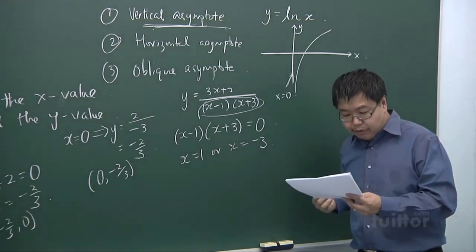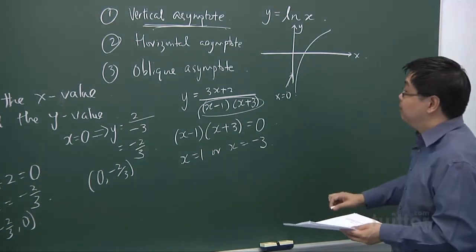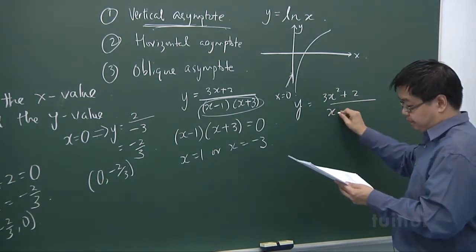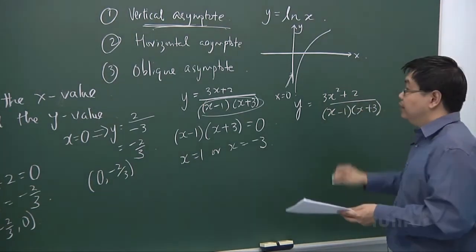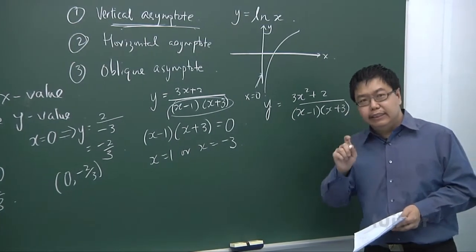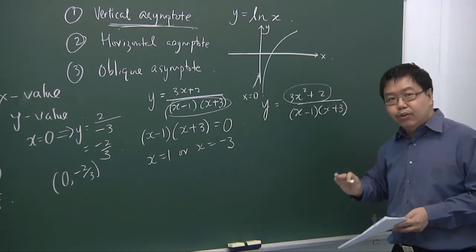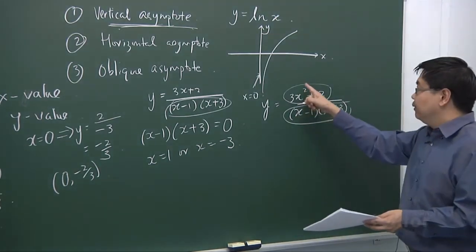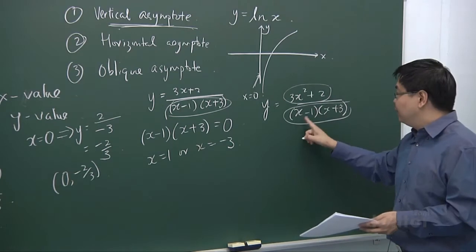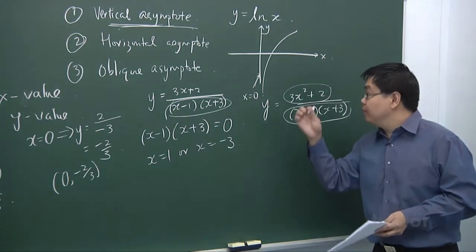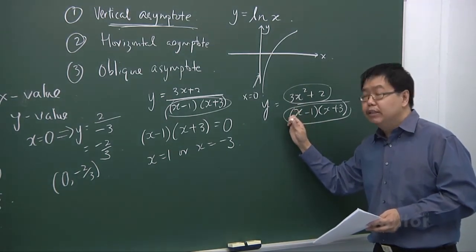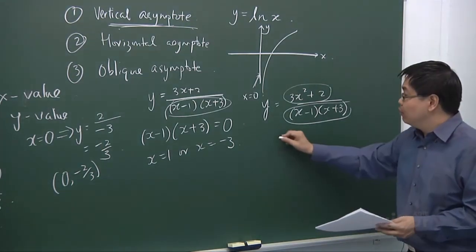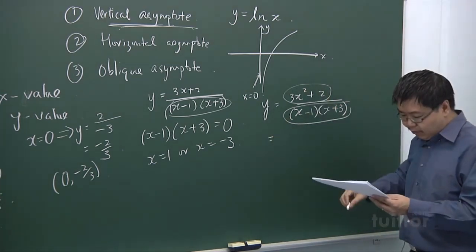Now let's talk about the second type of asymptote: the horizontal asymptote. A horizontal asymptote exists if the degree of the numerator is equal to or less than the degree of the denominator. In this modified example, the degree of the numerator is 2 and the degree of the denominator is also 2, so a horizontal asymptote exists. We can use long division to simplify this.